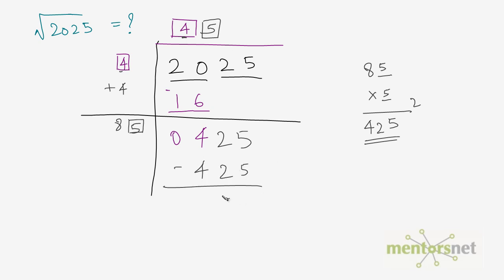Now, 425 minus 425 is 0. Once you get a 0 here, you can say that this number is the square root of 2025. So, the square root of 2025 is equal to 45.